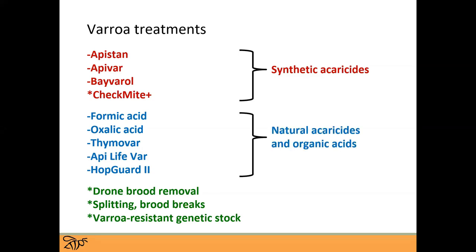The blue ones are natural acaricides and organic acids: formic acid, which has four different ways you can use it; oxalic acid; Thymavar; AP Lifebar; and HOPGAR2. Those last two are relatively new, so people might not be aware of them yet, but they are registered and can be used.